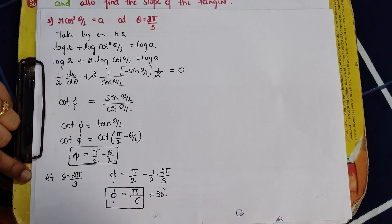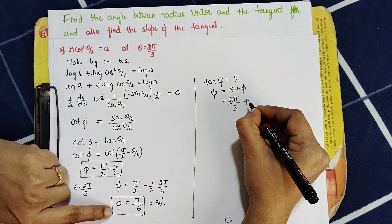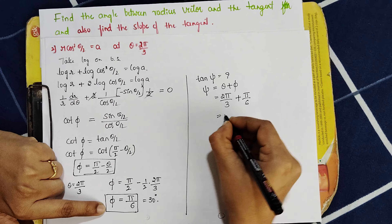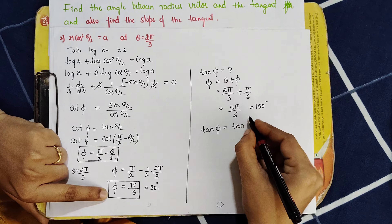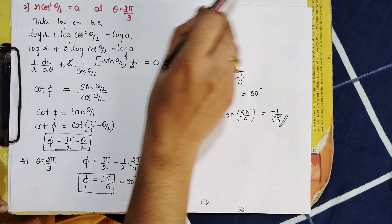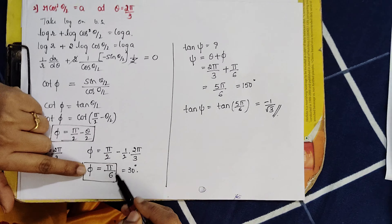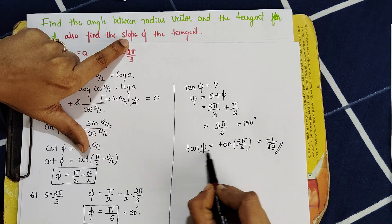Now I have φ = π/6. Next I need to find tan(ξ). First find ξ where ξ = θ + φ. The θ value from the equation is 2π/3, plus φ = π/6, giving ξ = 2π/3 + π/6 = 5π/6, which equals 150°. Substituting, tan(ξ) = tan(5π/6) = −1/√3. So the angle between the radius vector and the tangent is φ = π/6, and the slope of the tangent is −1/√3.